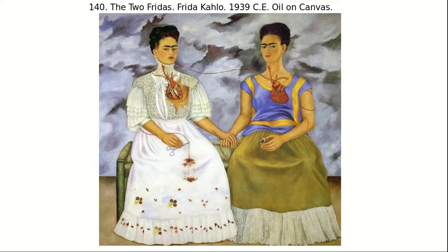This painting, The Two Fridas, is about her two identities: her Mexican identity and her more modern European identity. Her mother was Mexican and her father was German; she grew up in Mexico City. On the right she wears a traditional Mexican Tehuana dress, and on the left she wears a more German-European, modern, fashionable dress.